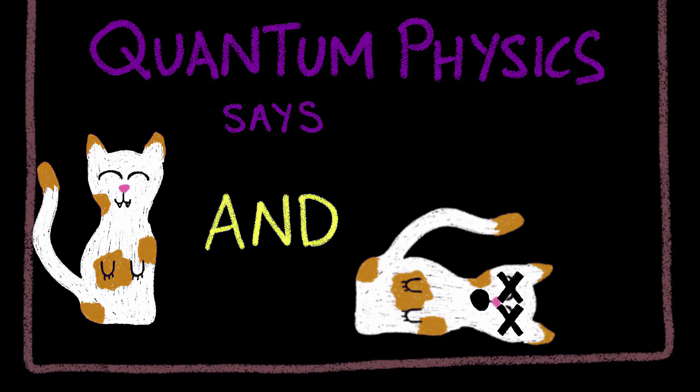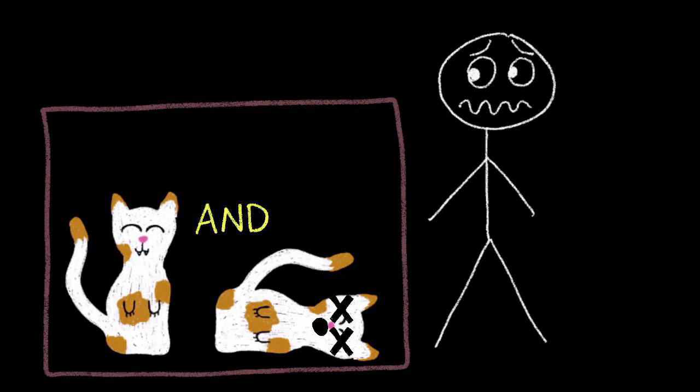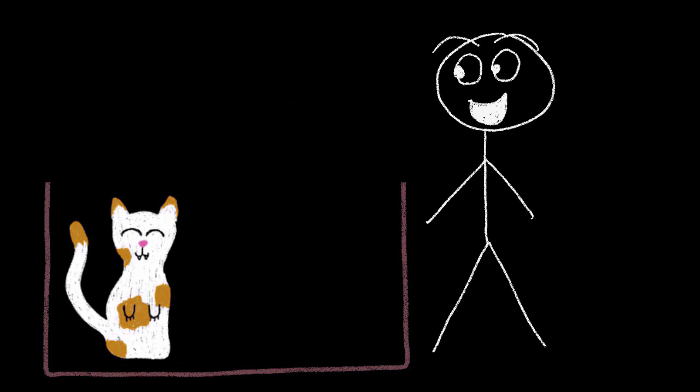Remember, it exists in all possible states until it is measured or observed. It is only when we open the box and take a look that the cat has to choose a state. Today, it chooses to be alive.